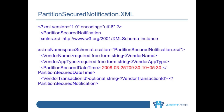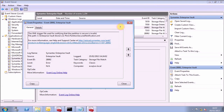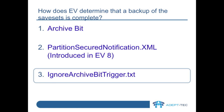As mentioned before, if this XML file is not valid, Enterprise Vault will log an event like this. Remember, when Enterprise Vault logs this event, it won't then go and look for the ignore-archive-bit-trigger.txt file. A trigger file should be created each time per partition — it cannot just be copied into the right place. This is because the CREATE date of the file is used to determine the date and time at which backups are seen to be completed.